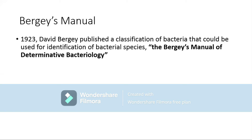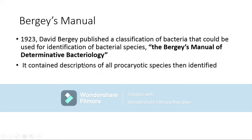It was a manual in which all classified species at that time were grouped together and their characteristics were listed. This collective effort by Bergey in 1923 meant that if someone had any unidentified species, they could match the properties of that unidentified strain with those listed in the manual and group it where most properties matched. However, this manual was based entirely on phenetic characteristics.